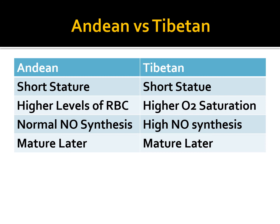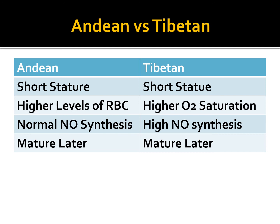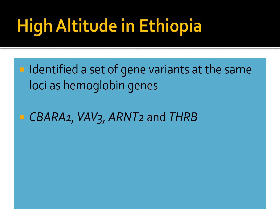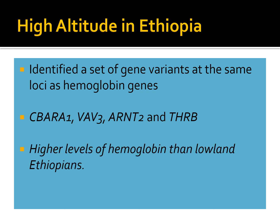Andeans have no NO synthesis while Tibetans have very high NO synthesis, and both populations tend to mature later. These are slight variations in genetic mechanisms controlling oxygen delivery to body tissues — two slightly different ways high altitude populations have adapted to the significant stressor of hypoxia. Current research in Ethiopia has identified gene variants at the same loci as normal hemoglobin genes: CBAR-A1, VA-V3, ARNT2, and THRB, which result in higher levels of hemoglobin production than lowland Ethiopians. This confirms that genetic adaptations for high altitude hypoxic stress relate back to differences in the blood system.